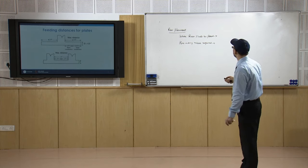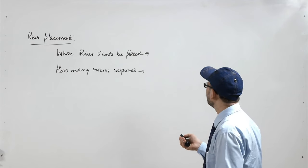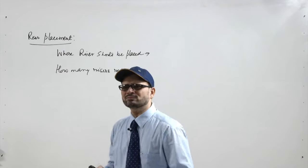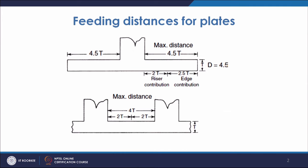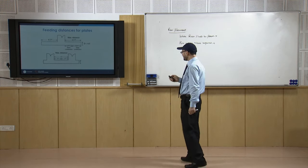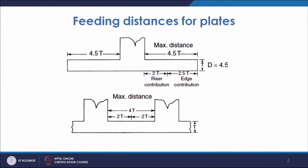Let us discuss about plates. How many risers to place depends on the longitudinal dimension of the casting and the distance up to which a riser can feed. For a plate type structure, the maximum distance which a riser can feed is shown as 4.5T, where T is the thickness of the plate. This is the feeding distance for the plate. There are two components: riser contribution and edge contribution. The riser contribution means the riser will ensure there is no shrinkage up to that distance, as it feeds liquid metal up to that point.